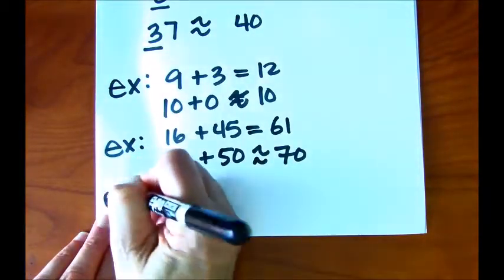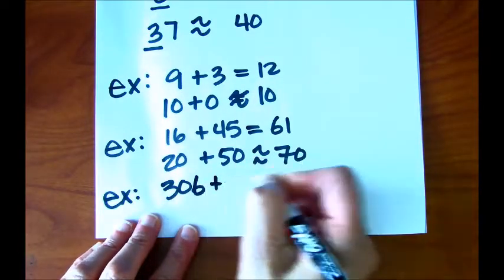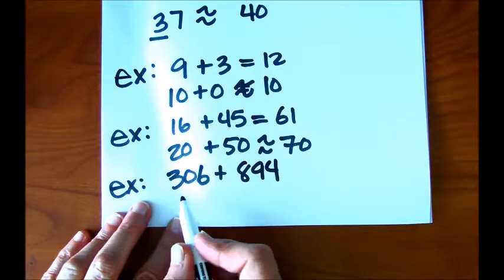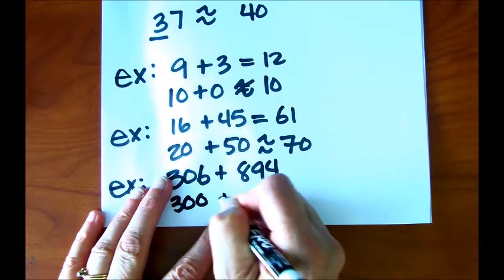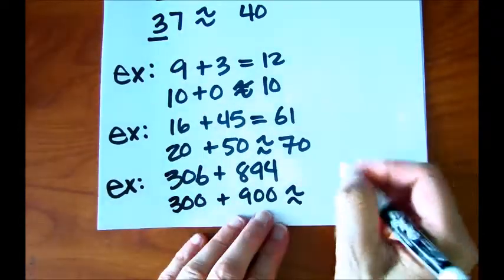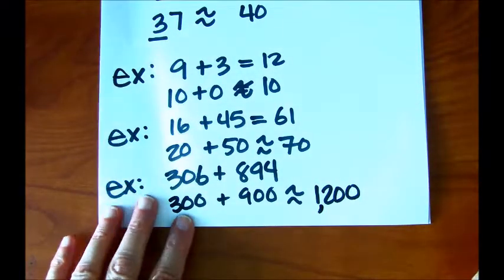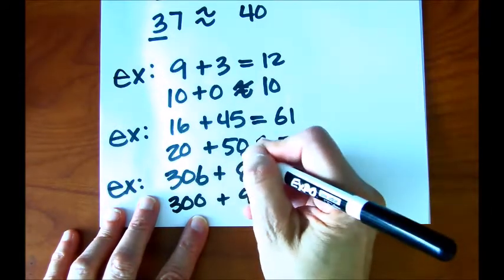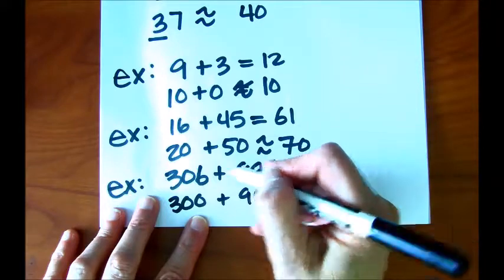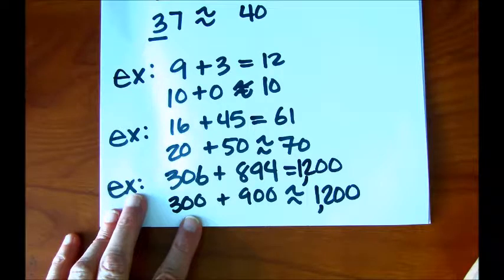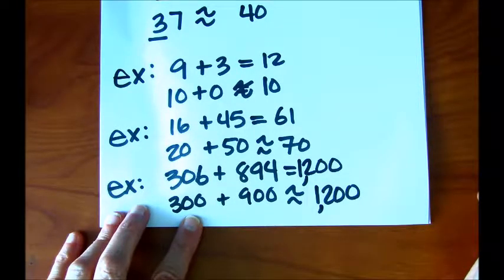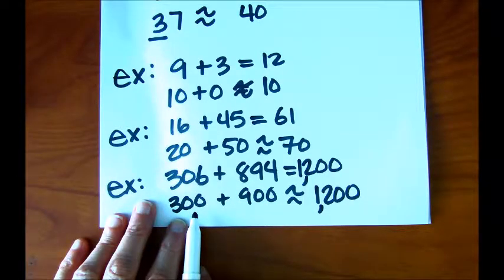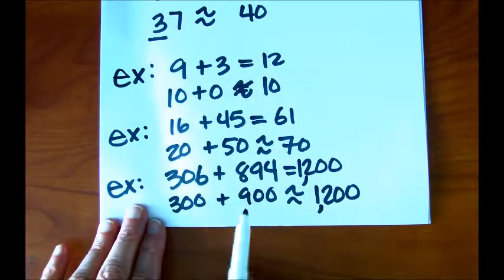Let's do one more. Let's say we have 306 plus 894. Again, I'm going to use front-end estimation — I'm going to round. 306 becomes 300, and 894 becomes 900, so my answer is approximately 1,200. Now if I were to add these together: 4 plus 6 is 10, carry the 1; 1 plus 9 is 10, carry the 1; and 1 plus 8 is 9, plus 3 is, in fact, 12. So in this case, our estimation and our actual number are the same. I went down 6 on one number and up 6 on the other, so I really didn't change the problem — I just reconfigured it.